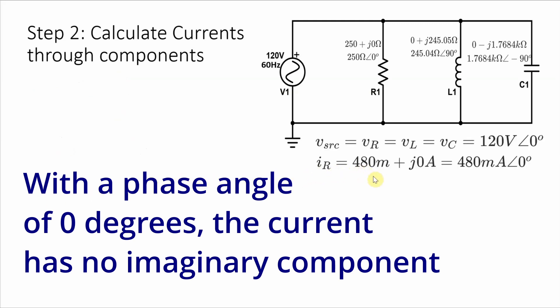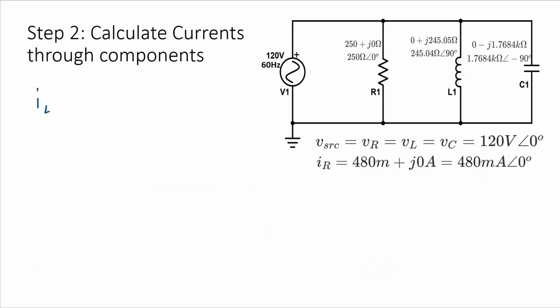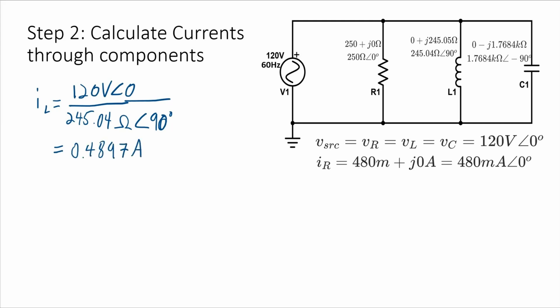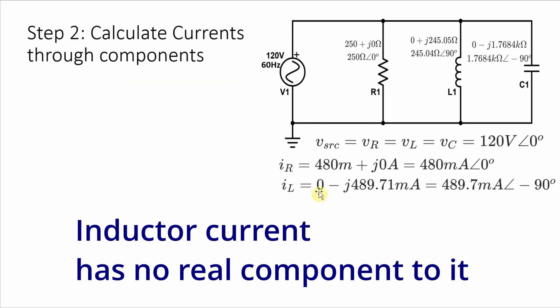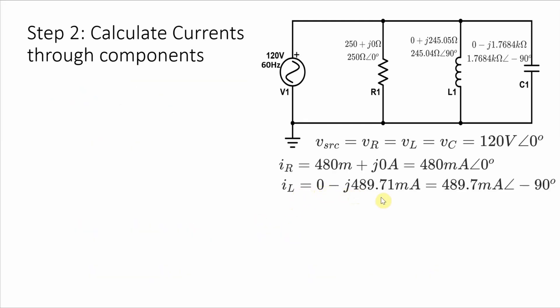I've got the values here in both rectangular notation and polar notation. Next, the current through the inductor — voltage across the inductor divided by its impedance. Divide the magnitudes and subtract the denominator phase from the numerator phase, so I get zero minus 90 for a phase angle of minus 90 degrees. Converting to rectangular coordinates, that's zero minus j·489.71 milliamps, or 489.71 milliamps with a phase angle of minus 90 degrees.